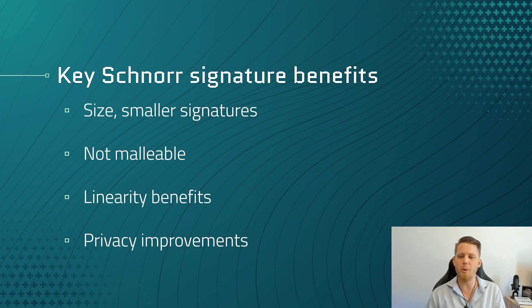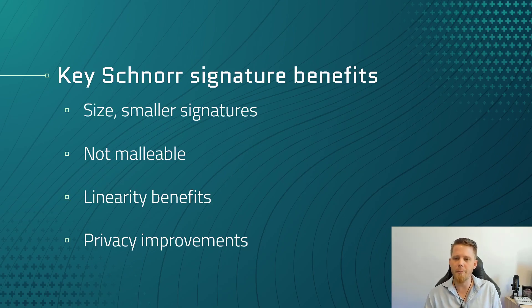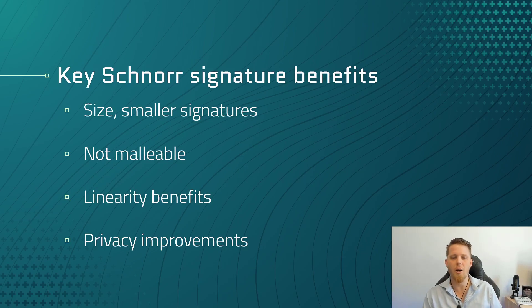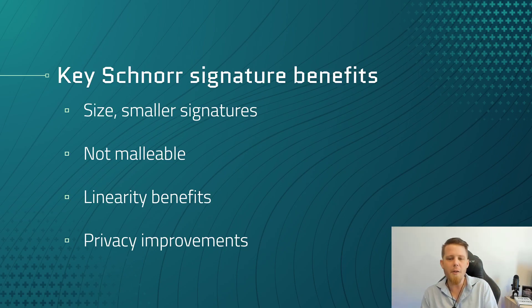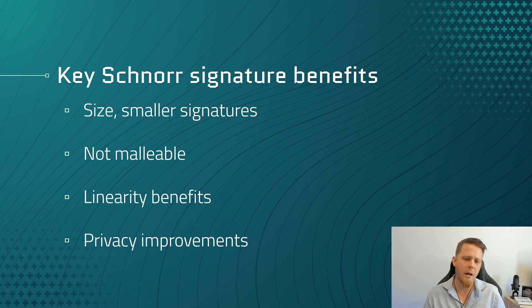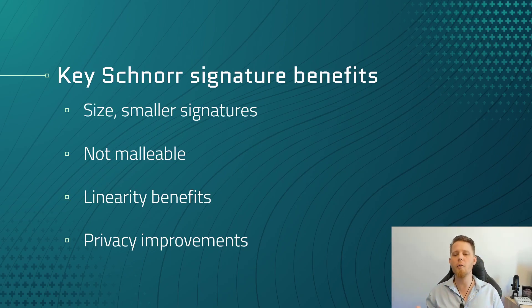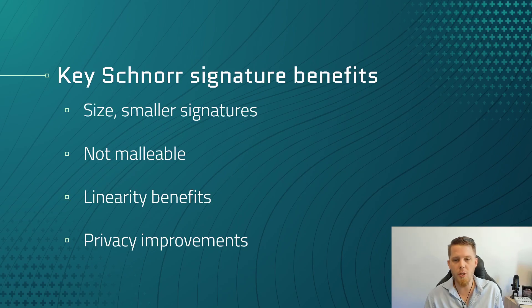Schnorr signatures are also not malleable. Malleable — think of gold: it's malleable, you can bend it, you can modify it a little bit. Schnorr signatures are not able to be modified and changed as ECDSA signatures are. With the original setup in Bitcoin the transactions were malleable, and this is what the Mt. Gox exchange claimed caused them to lose hundreds of thousands of Bitcoins, though this has been contested with other studies showing it was under 500 BTC lost. Bitcoin used Segregated Witness or SegWit to solve the malleability of transactions, but Schnorr signatures aren't inherently malleable — that's part of the reason why Bitcoin Cash implemented Schnorr signatures last year.